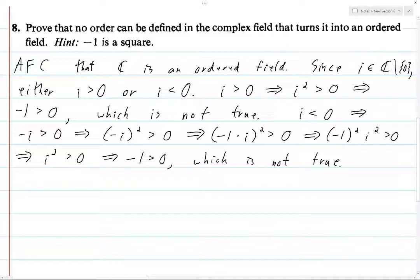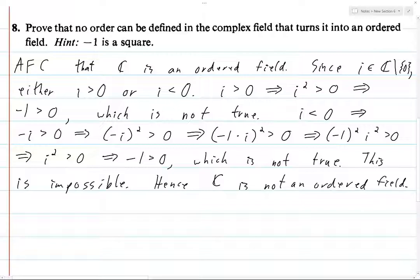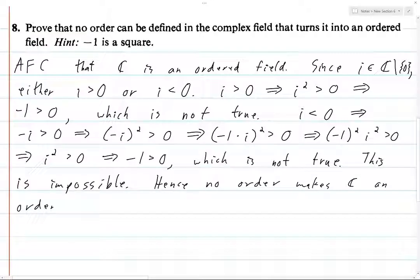So i is neither greater than 0 nor less than 0, which is impossible. This is impossible. Hence, C is not an ordered field. Or rather, hence, no order makes C an ordered field.